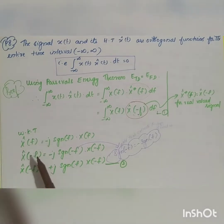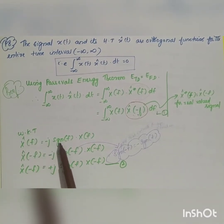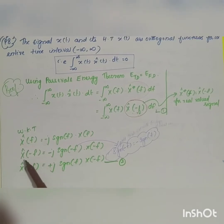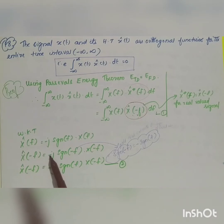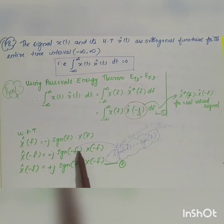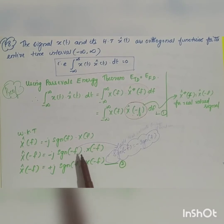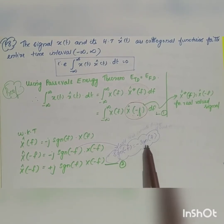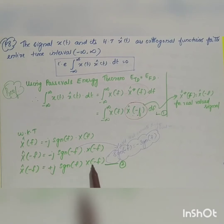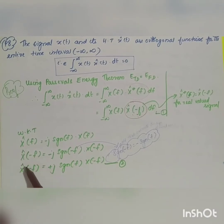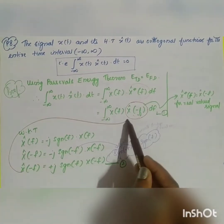We know that X̂(f) = −j·sgn(f)·X(f). Therefore, X̂(−f) is obtained by replacing f with −f: X̂(−f) = −j·sgn(−f)·X(−f). Since the signum function is an odd function, sgn(−f) = −sgn(f). So minus times minus gives plus: X̂(−f) = +j·sgn(f)·X(−f). We now have the value for X̂(−f), which we take as equation 2, and will substitute it into equation 1.